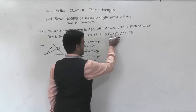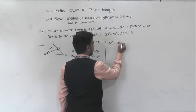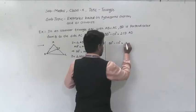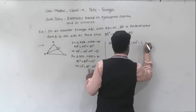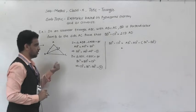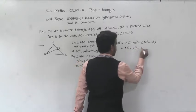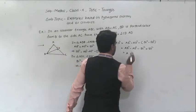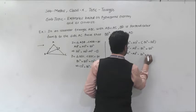Now we prove BD squared minus CD squared equals 2CD into AD. Taking LHS, BD squared minus CD squared. From equations 1 and 2: BD squared is AB squared minus AD squared, and CD squared is BC squared minus BD squared. So LHS equals AB squared minus AD squared minus bracket BC squared minus BD squared. Since AB equals AC in the isosceles triangle, we substitute AC for AB: AC squared minus AD squared minus BC squared plus BD squared.